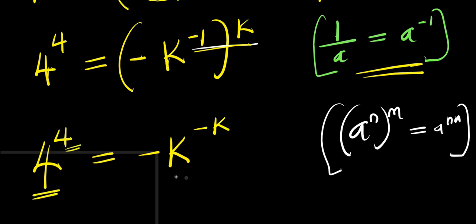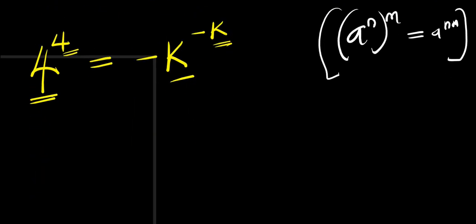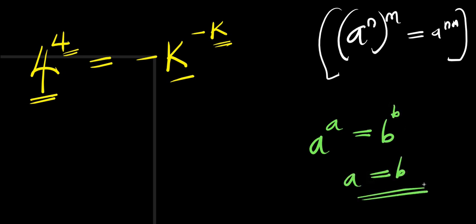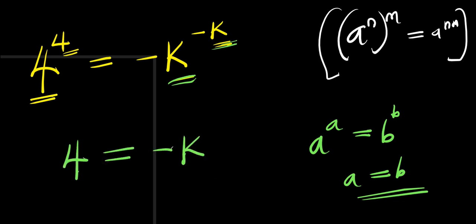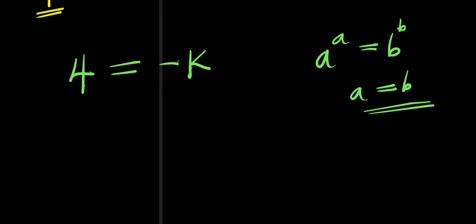Look at it here: 4 and 4, negative k and negative k. Let's consider this identity: if you have a power a equals b power b, that means a equals b. So 4 power 4 equals negative k power negative k means that 4 equals negative k. Or you can just rewrite it as negative k equals 4 by rearranging it.